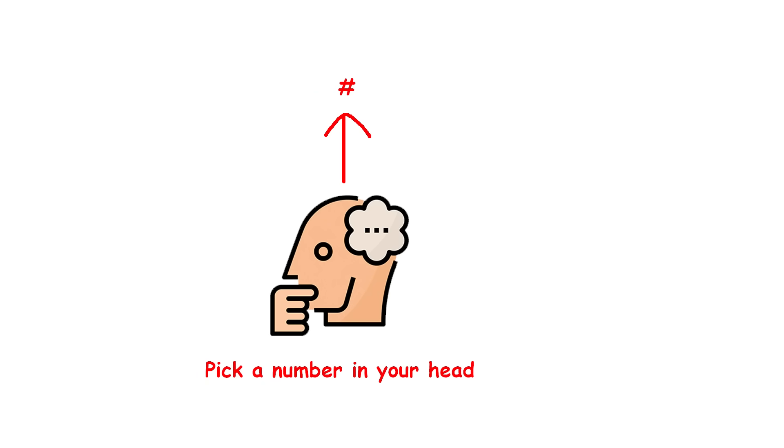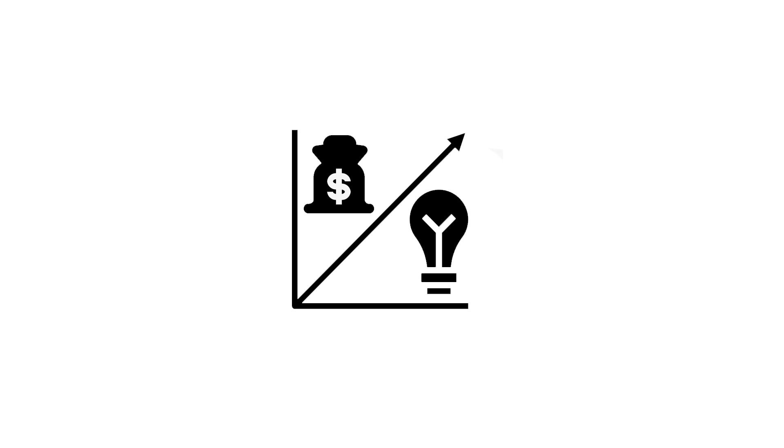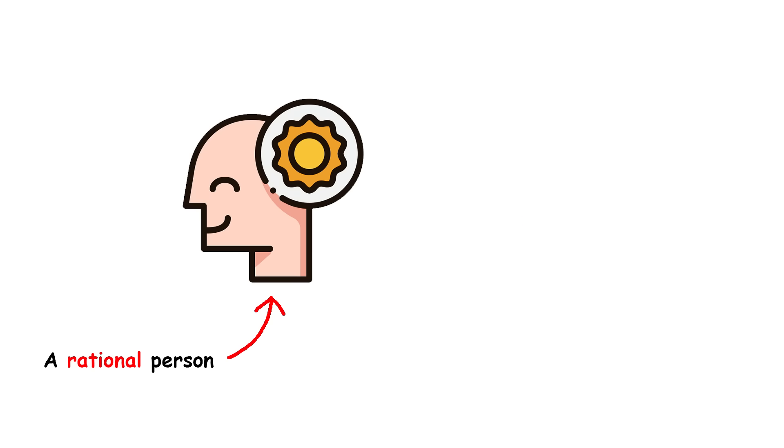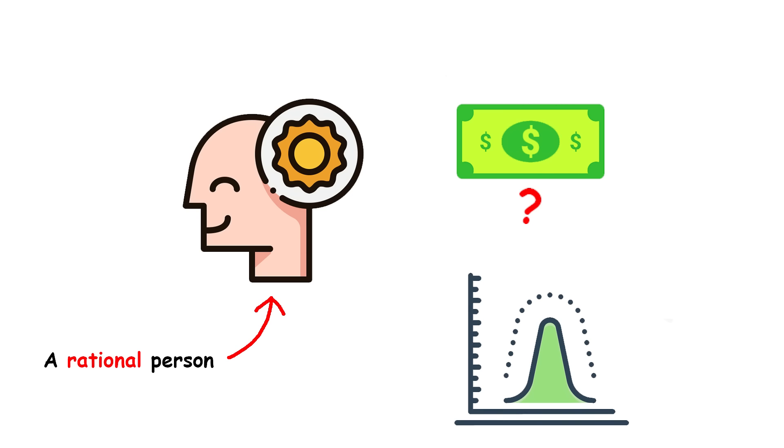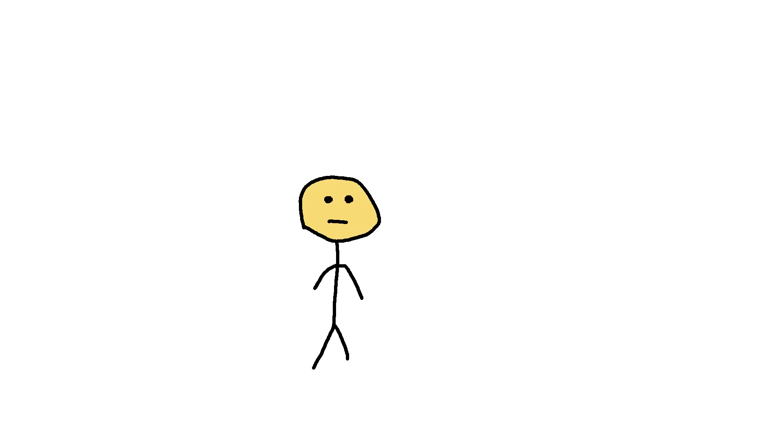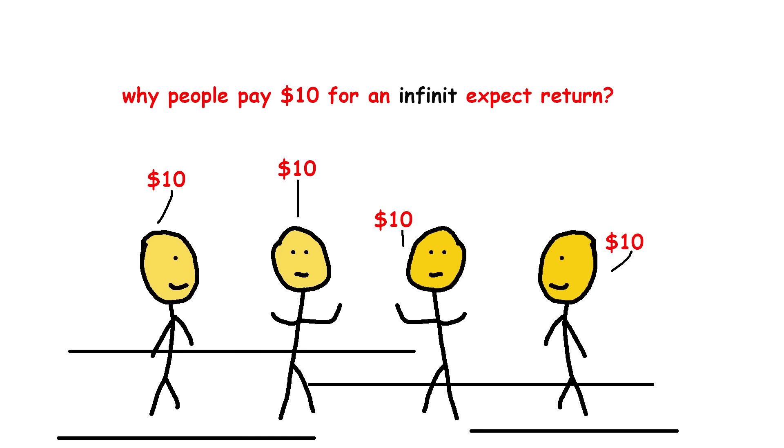Based on the expected value theory, a rational person should be willing to pay any price for a ticket in this game. After all, there is a small probability that the coin will land on tails so many times in a row that the payout is infinity, and anything times infinity is infinity. In reality, however, people are rarely willing to pay more than $10 to $20. This is the St. Petersburg Paradox. Why are people only willing to pay $10 for a game which has an infinite expected value?